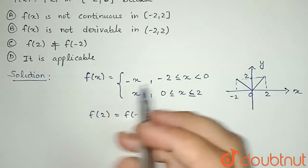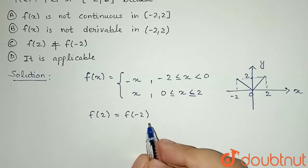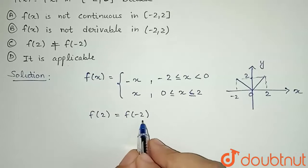That means option C is not the reason for the Rolle's theorem to be not applicable. So we are getting this.